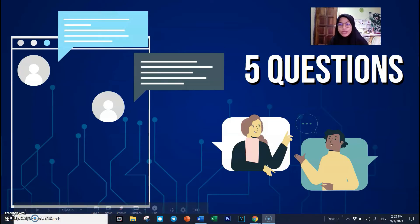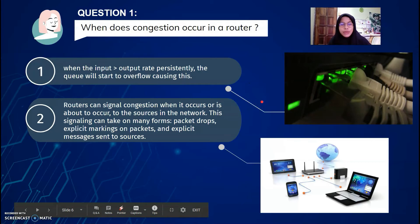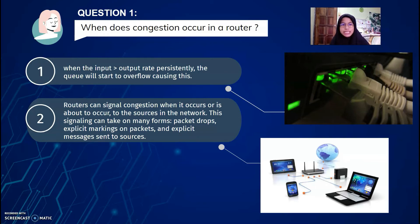Now we move on to the question session. First question: when does congestion or network traffic occur in a router? The answer is when the input and output rate persistently exceed capacity, the queue will start to overflow causing congestion. However, routers can signal congestion when it occurs or is about to occur to the sources in the network. This signaling can take on many forms: packet drops, explicit marking on packets, and explicit messages to the sources.